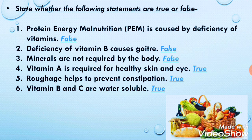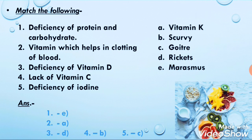Next is the matching exercise. In column A, match with column B. First: deficiency of protein and carbohydrate — as I told you, this disease occurs in small children. The name of the disease is marasmus, so you can match it with marasmus.